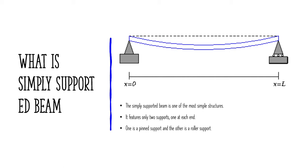The deflection is minimum at the end points, that is at x equal to zero and x equal to the length of the beam, and it is maximum at the midpoint of the beam. You can see in this picture that there is minimum deflection at the left-hand side and minimum deflection at the right-hand side, but maximum deflection at the center of the beam.